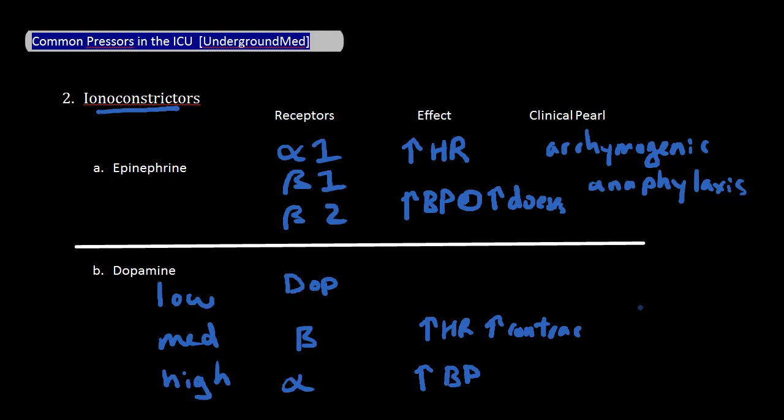While the textbooks often emphasize these dose-dependent actions, many critical care physicians feel that in reality things are less clear-cut. Think of these doses as more of a starting point for titration than as a hard and fast rule.